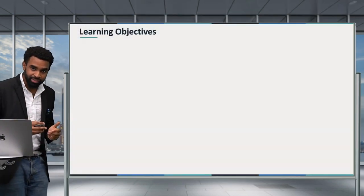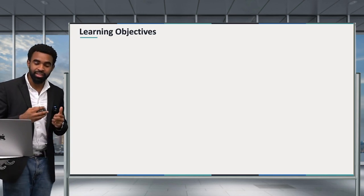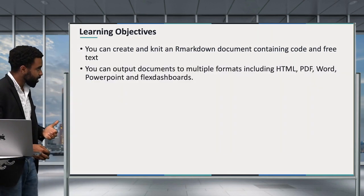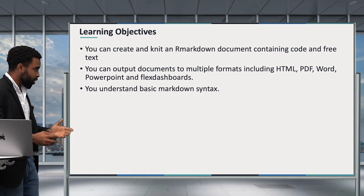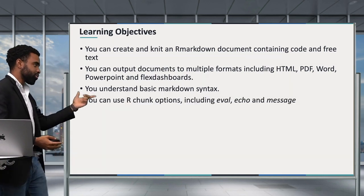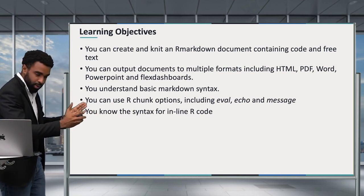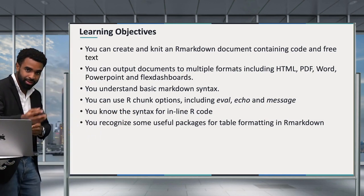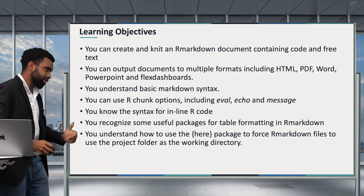Congratulations on getting through this fairly long lesson. Here are some of the learning objectives we had set out at the start. Hopefully by now you can create and knit an R Markdown document with code and free text, know the different output formats including HTML, PDF, Word, PowerPoint, and Flex Dashboards, understand basic Markdown syntax for bold, italics, and bullet points, know how to use code chunk options including eval, echo, and message, know inline R code syntax, recognize useful table packages like FlexTable and GT, and understand how to use the here package to force R Markdown to use the project folder as the working directory.